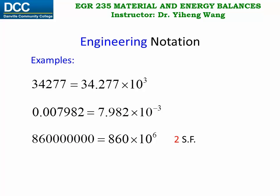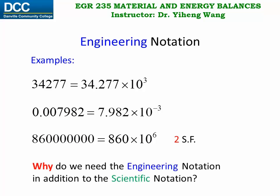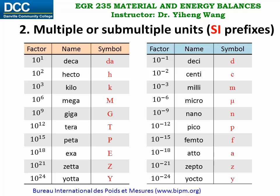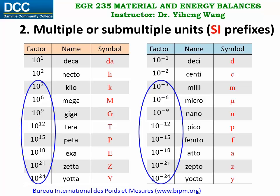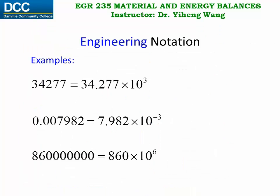Now you may have the question, why do we need the engineering notation since we already have scientific notation? Well, if you still recall this table on SI prefixes, you will notice that for most prefixes they change by a factor of a thousand, which is ten to the third power. Therefore, engineering notation can be very convenient in unit conversion.